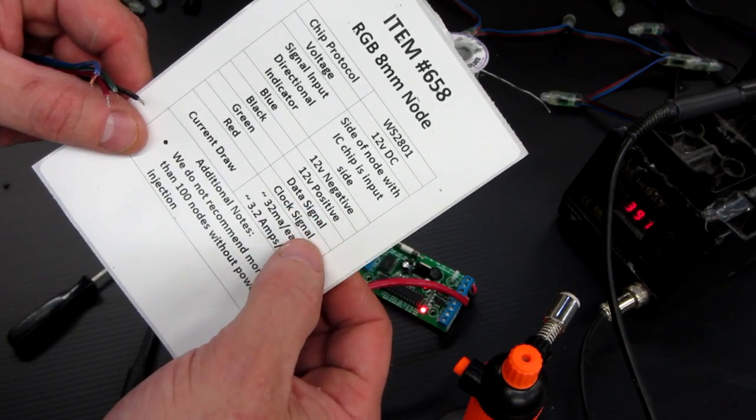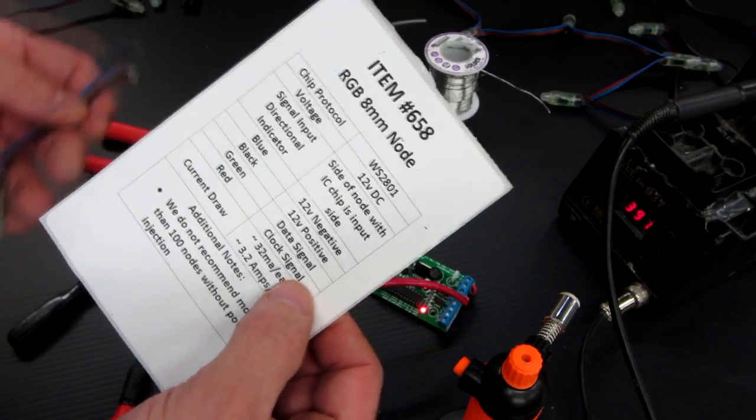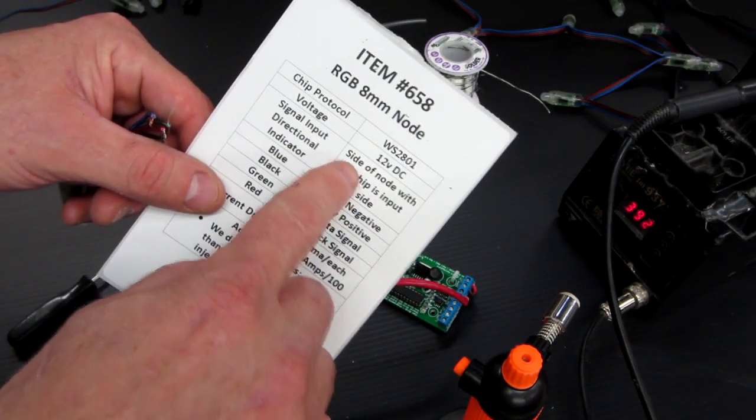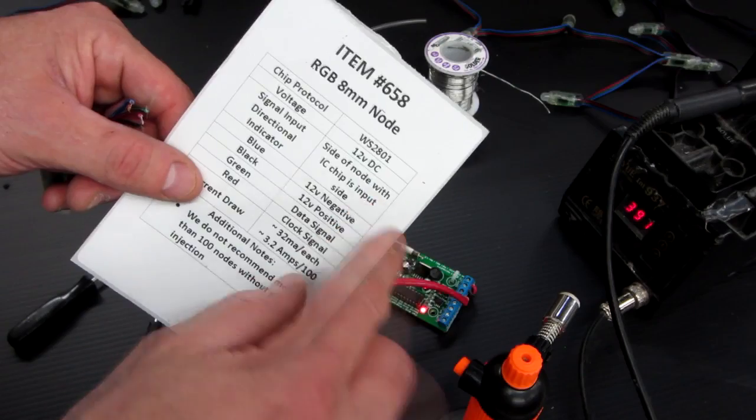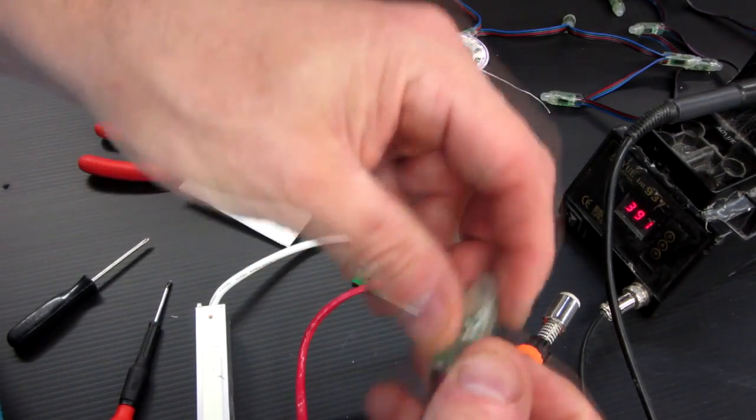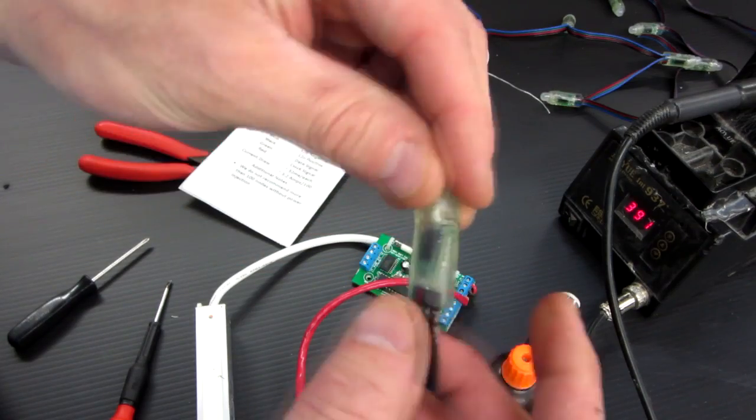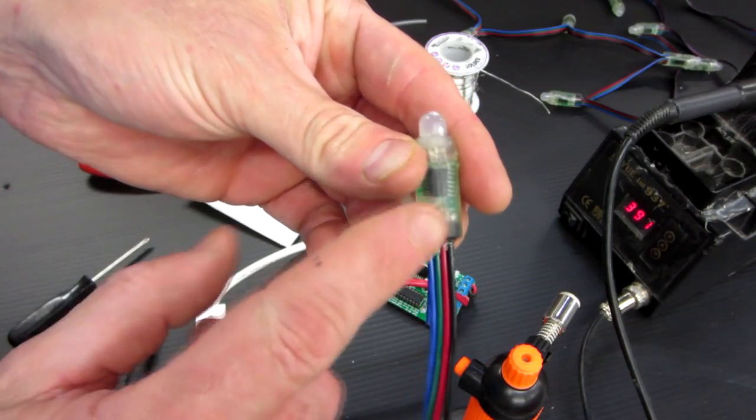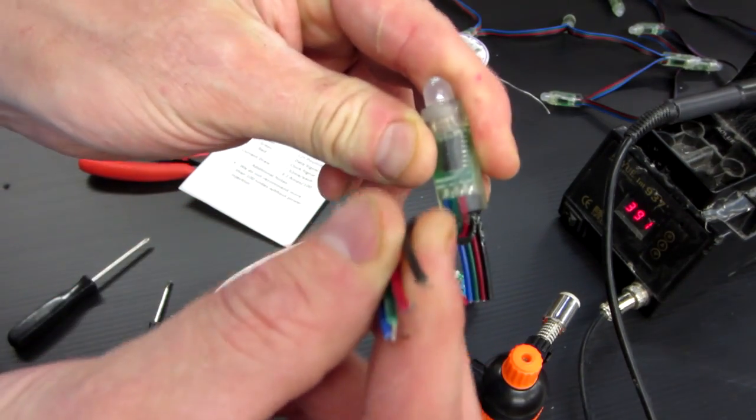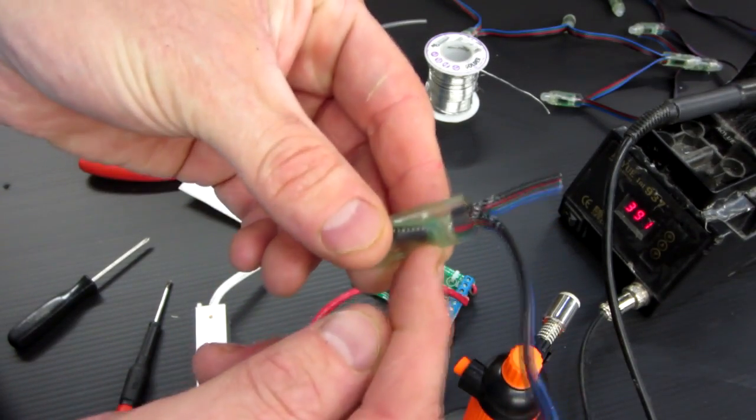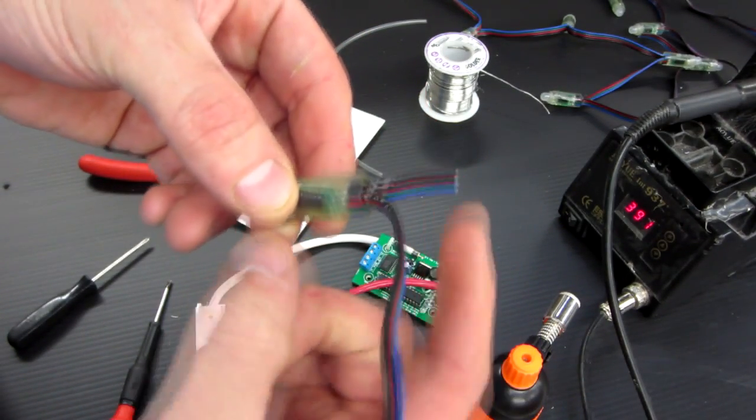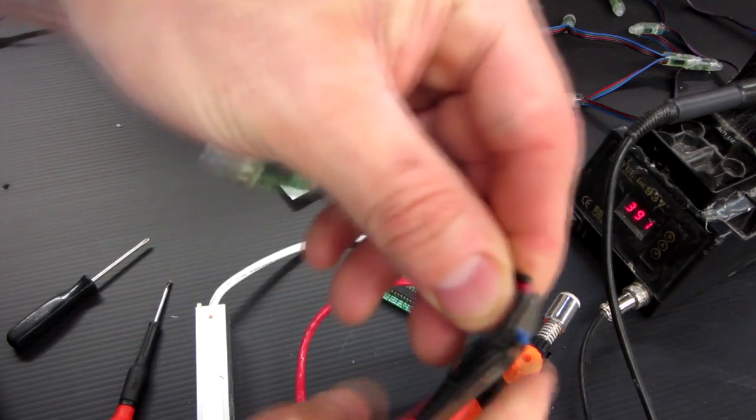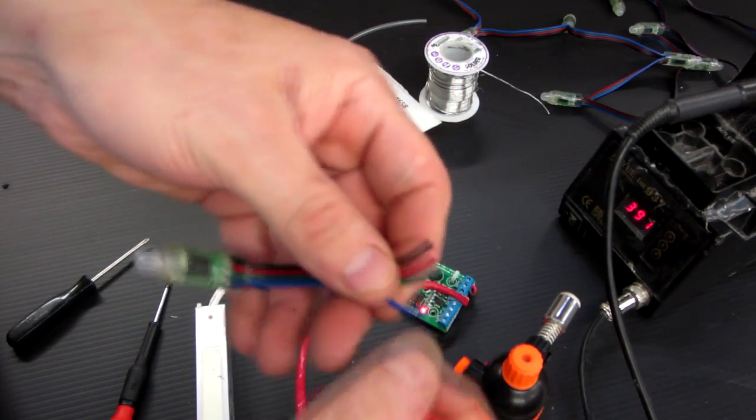Next, we have green is data signal and red is the clock signal. Now, some pixels will just have a data signal and no clock signal and that varies. In 2801, we always have four wires. It also has a note for the directional indicator and it says side of node with IC chip is input side. So in this particular node, we have no IC on this side. If we flip it around, we see an IC. You can see the little black IC. So that means that this side is the side that we do as the input. So chip on this side, this is the input, that's the output. Let's go ahead and we're just going to cut off these wires and start from scratch here. We're just going to hook up a test pixel.